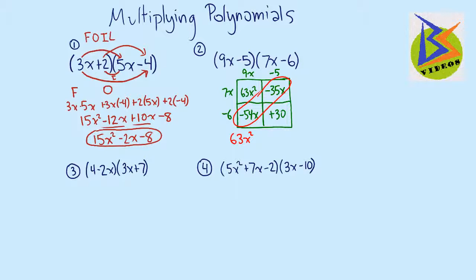Minus 35x minus 54x is a minus 89x. And then we have this plus 30, which, again, does not have a like term. And there's nothing more that we can do with that.